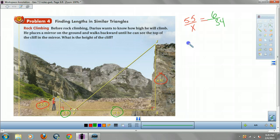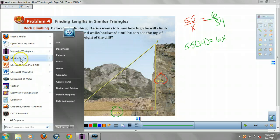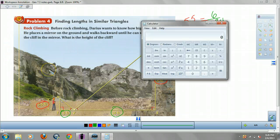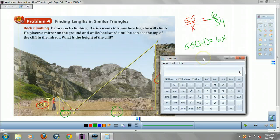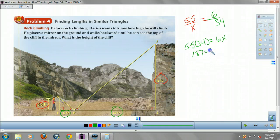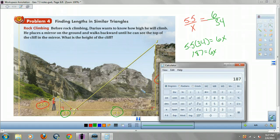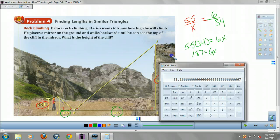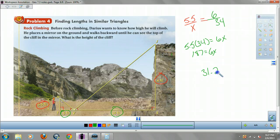And then you cross multiply. That's 5.5 times that, 187 equals 6X. Divided by 6. About 31.2 feet. Don't fall, Darius. Make sure you bring safety gear. Okay. That's it, guys.